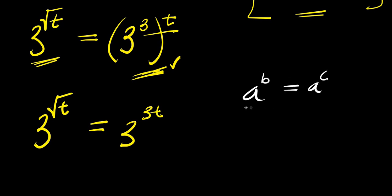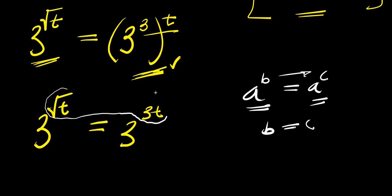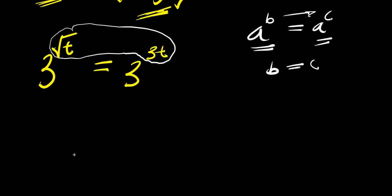If you have a power b and this equals a power c, when the bases are the same you compare the exponents — that means you have b equal c. So that means this square root of t equals 3t.